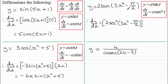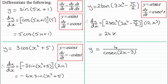Differentiating t, which was 3x to the 4 minus π/2, with respect to x gives 12x cubed, because π/2 is a constant. So we've got 12x cubed. Tidying this up: 2 times 12x cubed gives 24x cubed, multiplied by sec squared of all of 3x to the power 4 minus π/2.